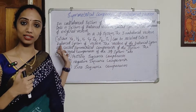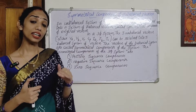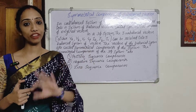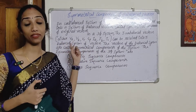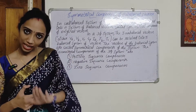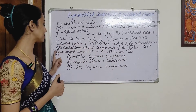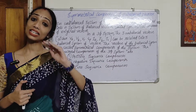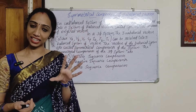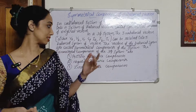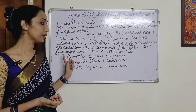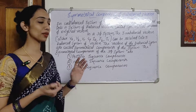In this three-phase system, the three unbalanced vectors are VA, VB and VC — or in the case of current, IA, IB and IC — which can be resolved into three balanced systems of vectors. The symmetrical components of the three-phase system are the positive sequence component, negative sequence component, and the zero sequence component.